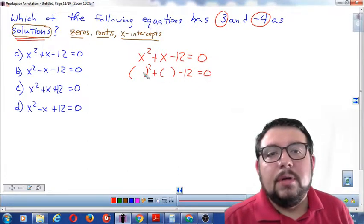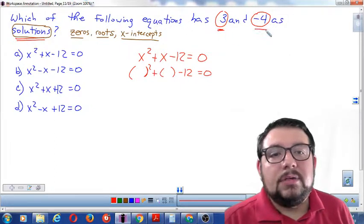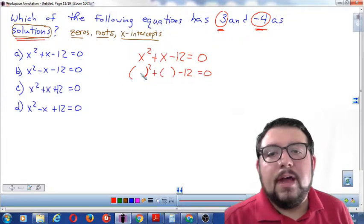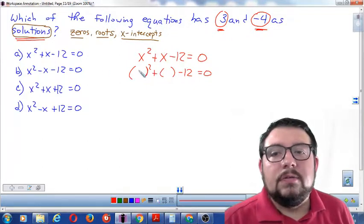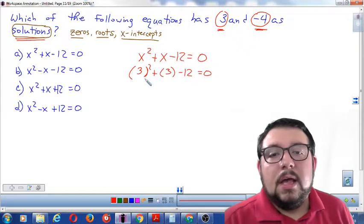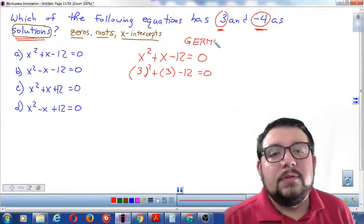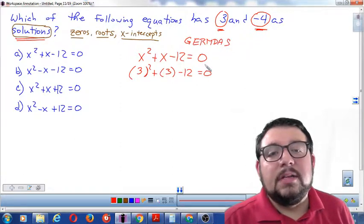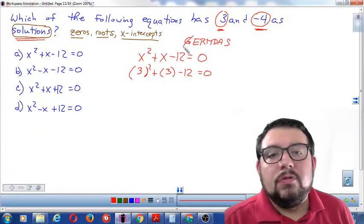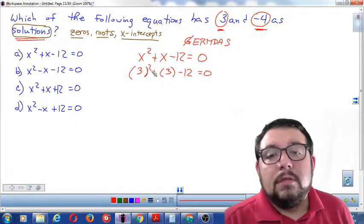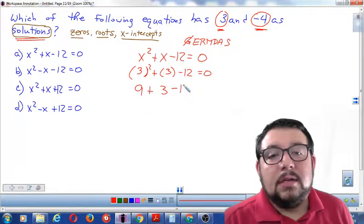Substitution means change the letter to a number. Here I have the number 3 and negative 4. I'm going to check both of those and if they both come out correct, then I know that the answer is correct. Let's try 3 and 3. I'm going to put those in and now it becomes my old friend, GERMDAS. GERMDAS is the high school version of PEMDAS. There's no groupings and we're looking for exponents now. 3 squared, 3 times 3 is 9.